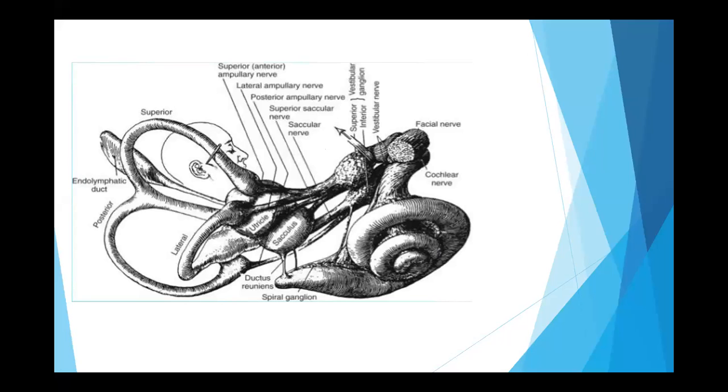This is an easy to understand, self-explanatory picture of the anatomy of the vestibular system. You are looking at your superior, your posterior, and your horizontal semicircular canals.